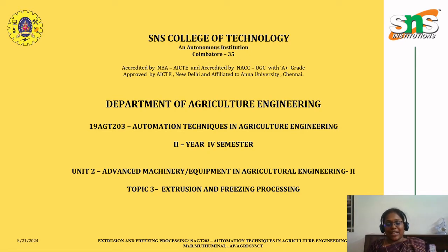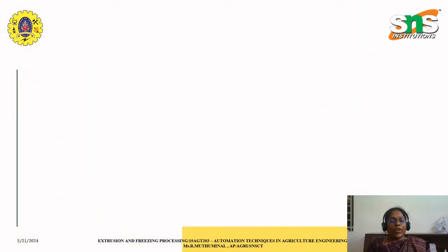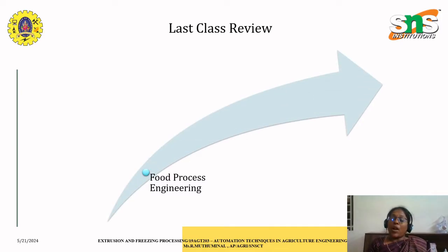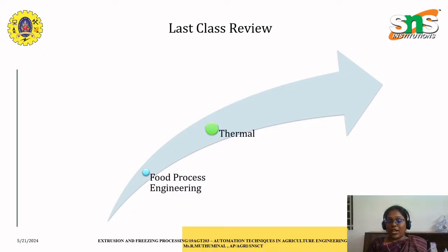For the students of second year, fourth semester, before going into the session we'll have a small recap of what we have seen in the previous classes. We covered what food process engineering is, what methods are involved, why we need food process engineering, and why it is so important in automating it. The main methods discussed were thermal processing and non-thermal processing.